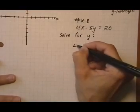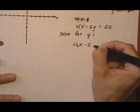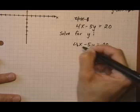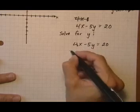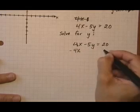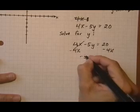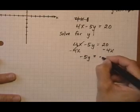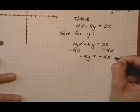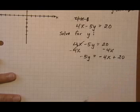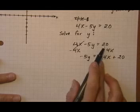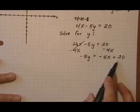So the first thing we need to do is take away 4x from both sides. We don't want the x term to be there and we need to subtract it from both sides. It goes away on the left. Negative 5y equals, and I'm going to keep the x term first because that's what the slope-intercept format looks like, minus 4x plus 20. They don't combine because they're not like terms.